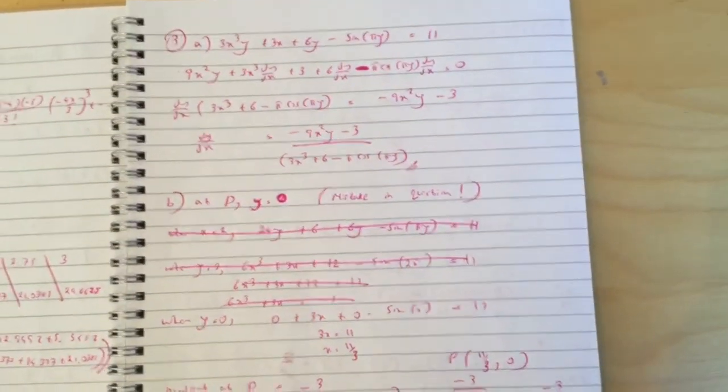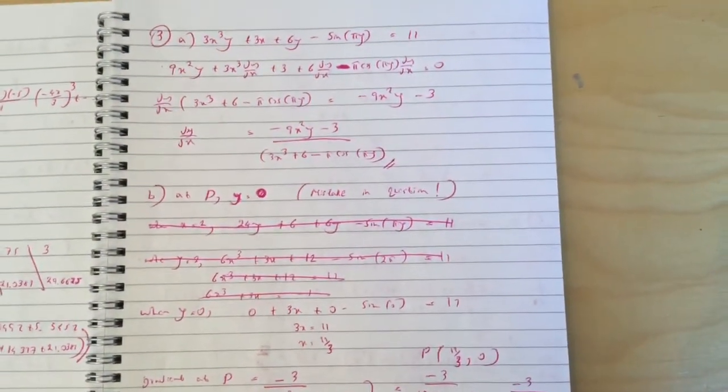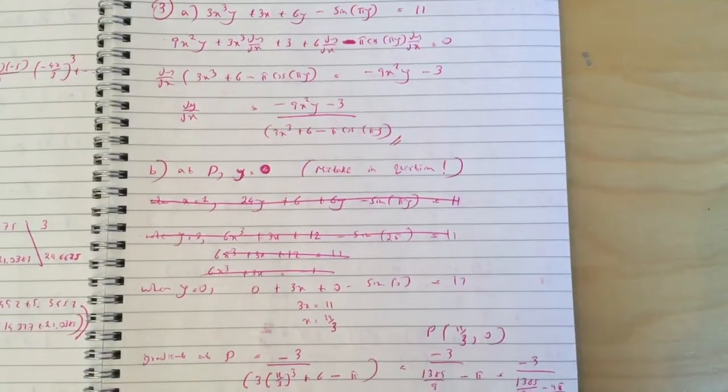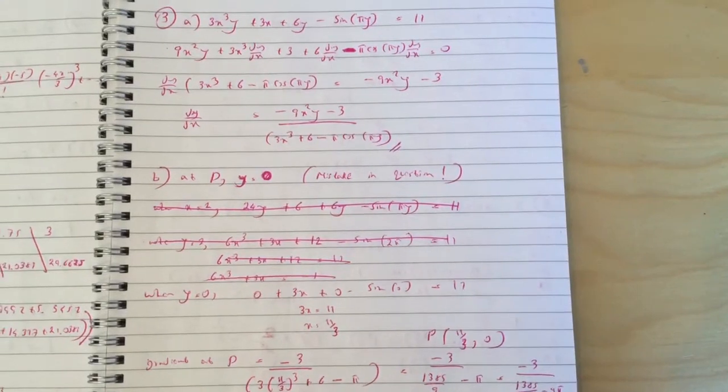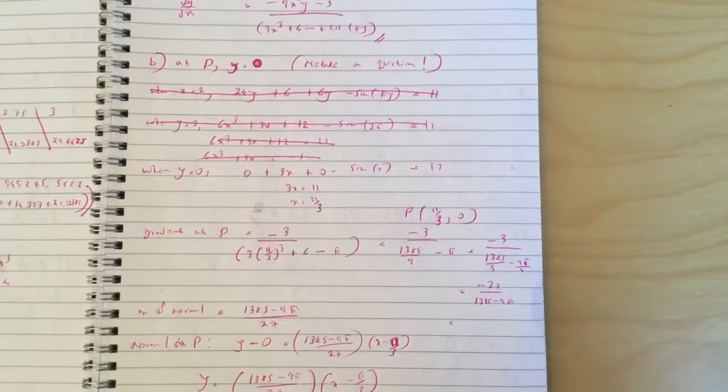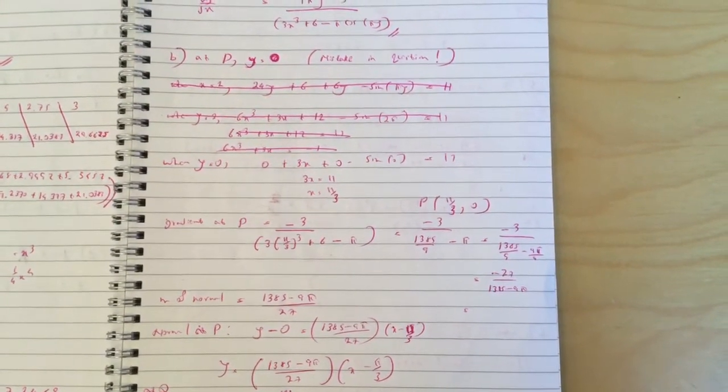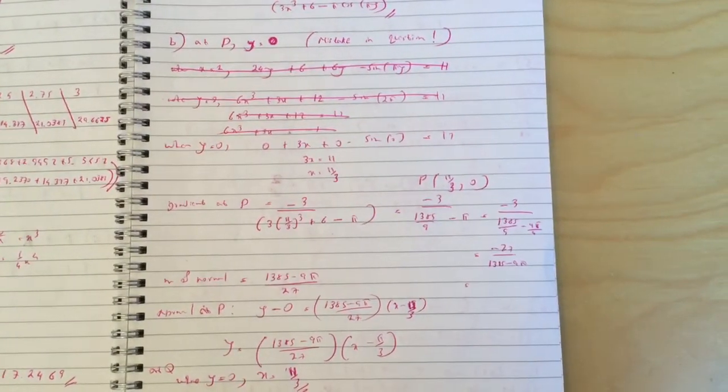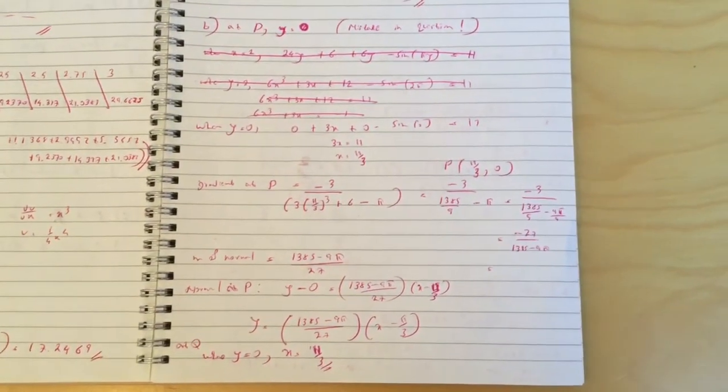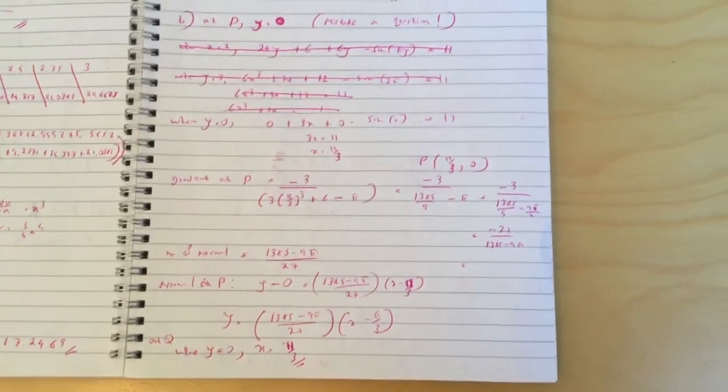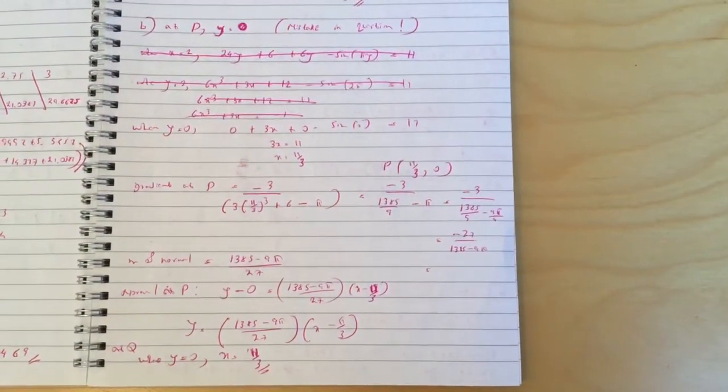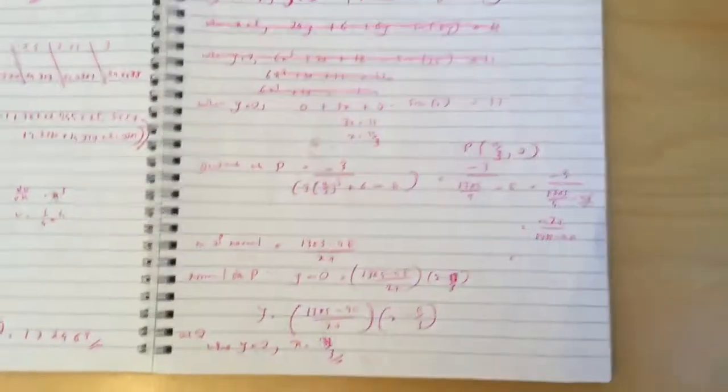Now I know in the initial question I said point P has x equal to 2. Unfortunately it's not possible to solve with x equal to 2, so I changed the question slightly - it's y equals 0, so it's a mistake in the question. If you use y equal to 0 you get x equals 11 over 3, and the gradient at P works out to be minus 27 over 1385 minus 9 pi. Then the normal would be the negative reciprocal of that and you use the equation. It's a bit of a typo in the question but you can still do it with this value.